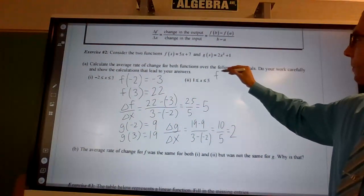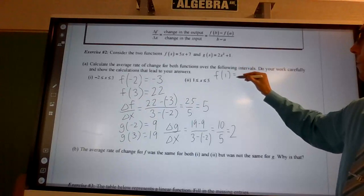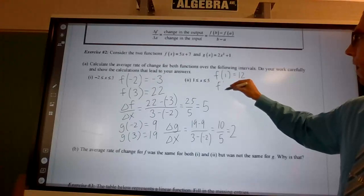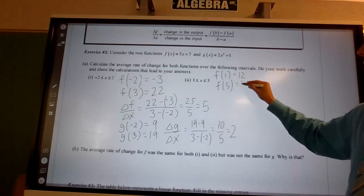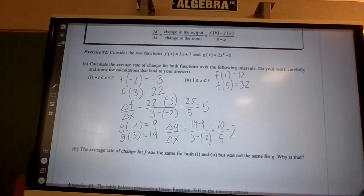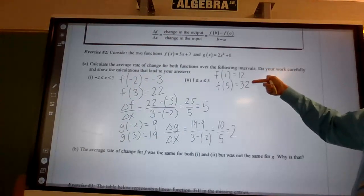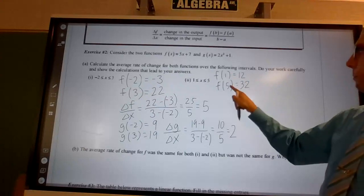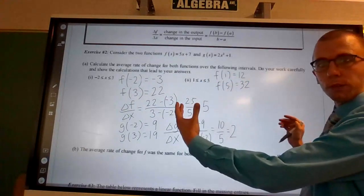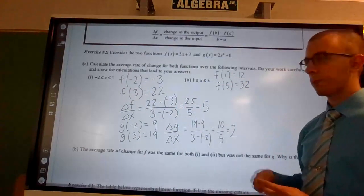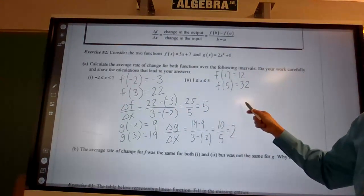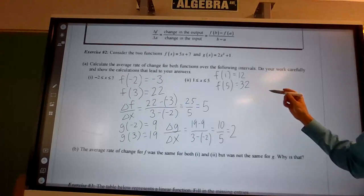Okay, so same thing here. I'm going to do first f of 1, which is 12, and f of 5, which is 32. So now I have my two outputs for my given inputs. Remember, these inputs came from the ends of our intervals. We know our interval starts at 1 and ends at 5, so what's happening in between? I'm finding out how fast it's changing here.